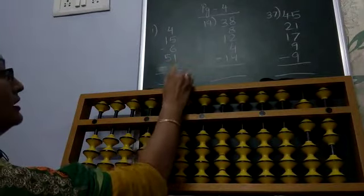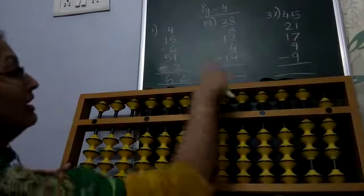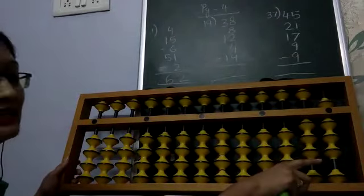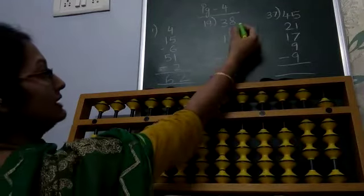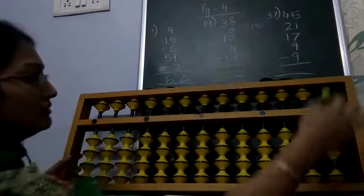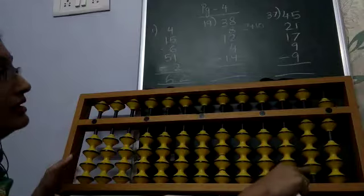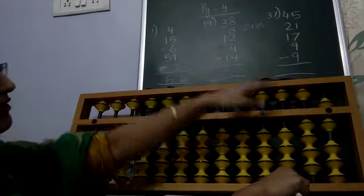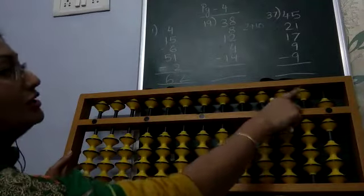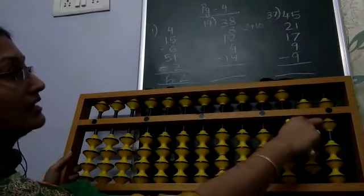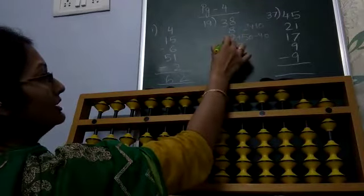Question number 19 is: 38 plus 8. Here plus 8 is not possible directly, so we apply the big friend formula: minus 2 plus 10. After minus 2, we cannot add 1 in the tens place because there are no lower beads. So we apply the small friend formula — since 5 is there, the plus 10 formula becomes plus 50 minus 40. We have applied plus 50 minus 40 for 10.